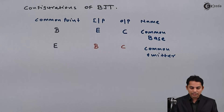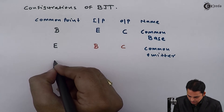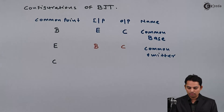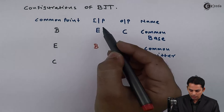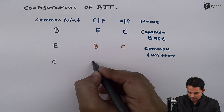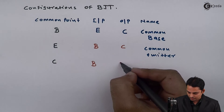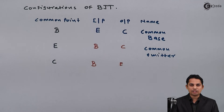The third configuration is common collector, in which collector is common between input and output. Since collector is common, the input will be base and the output will be emitter. This configuration is called common collector configuration.